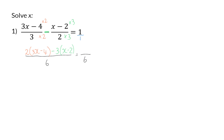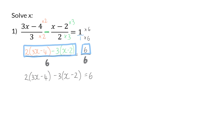And on the right-hand side, the denominator is 1, and I still have to multiply it by 6, and that will give me 6 over 6. Now, the denominators are the same, and in my next step, I can say that the numerator on the left is equal to the numerator on the right. Now we need to get rid of the brackets by multiplying in the 2 in the first bracket to get 6x minus 8, and then the minus 3 in the second bracket to get minus 3x plus 6.